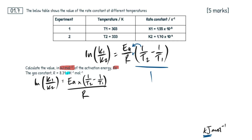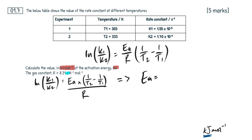Again, you can skip this entirely if you're confident with your maths ability — maybe you do A-level maths — but I know not all of you do, so hopefully this helps. To rearrange this expression to make activation energy the subject, I'm going to multiply both sides by R to get rid of it on this side. So it's going to be LN(K1 over K2) multiplied by R.